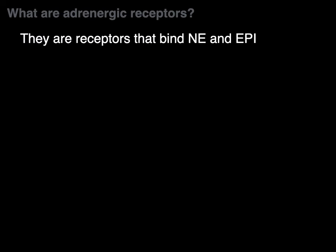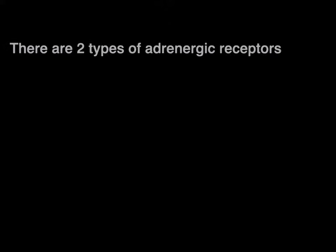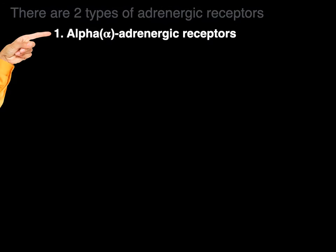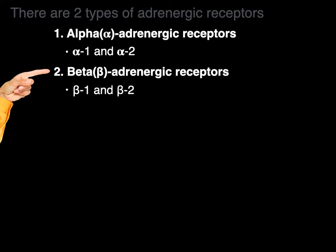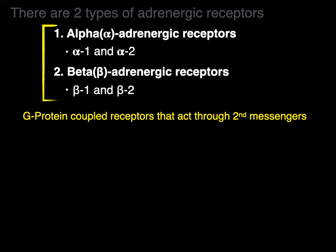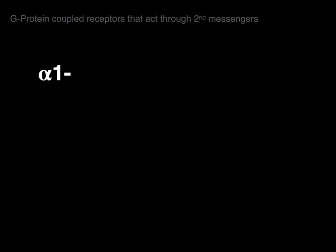So what are adrenergic receptors? They are receptors that bind norepinephrine and epinephrine, or noradrenaline and adrenaline. There are two types: alpha adrenergic receptors with alpha-1 and alpha-2 subtypes, and beta adrenergic receptors with beta-1 and beta-2 subtypes. There is a beta-3 but it will not be covered in this tutorial. All these adrenergic receptors are part of the G-protein family.